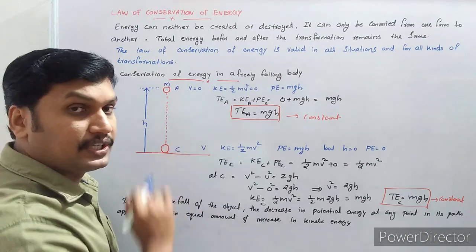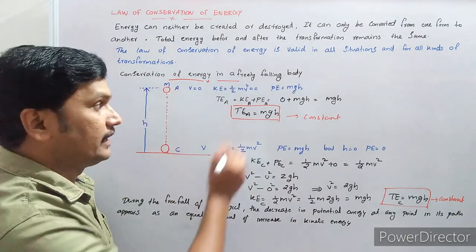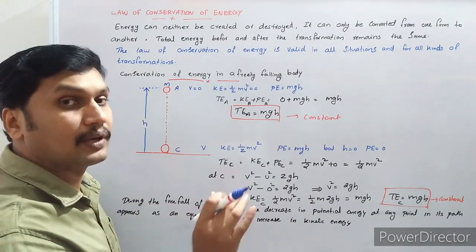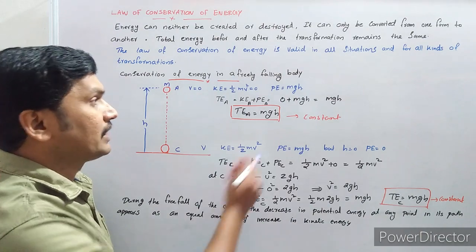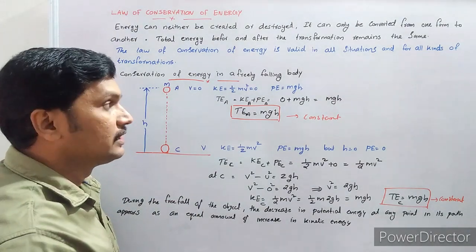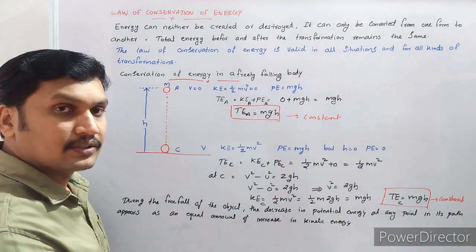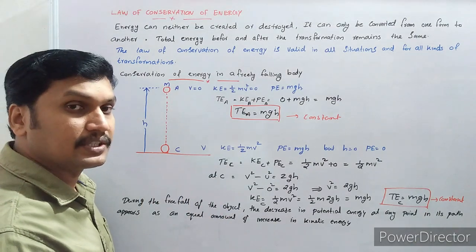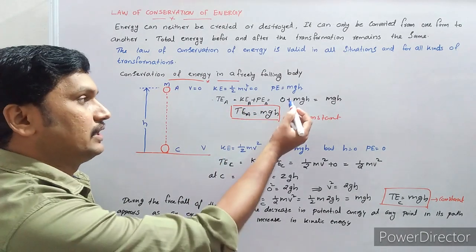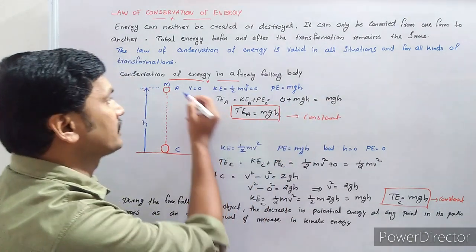The body is at rest; its initial velocity is zero. At point A, the kinetic energy of that object is equal to half mV squared. As velocity is zero, kinetic energy at point A equals zero — the object is at rest. But it has potential energy; potential energy is equal to mgh. The total energy equals kinetic energy at A plus potential energy at A, which is zero plus mgh, equal to mgh. That is the total energy at point A.